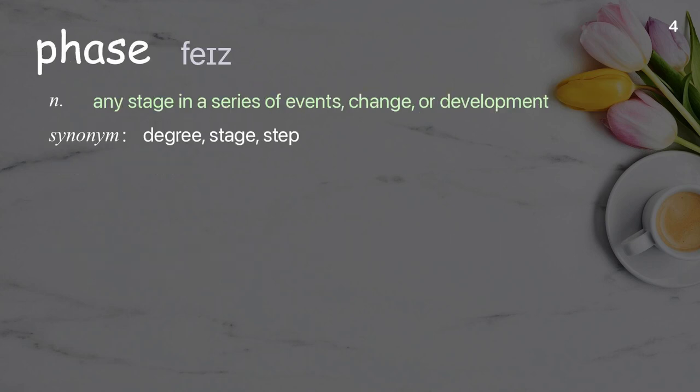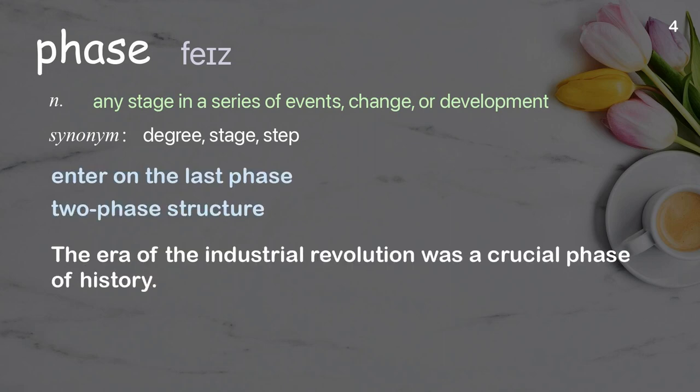Phase: any stage in a series of events, change, or development. Examples: enter on the last phase; two-phase structure. The era of the Industrial Revolution was a crucial phase of history.